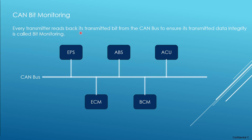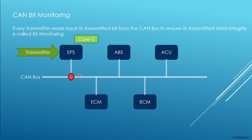We will see two cases to understand bit monitoring. Consider EPS as a transmitter. In case one, EPS starts to send the CAN bit data as one into the CAN bus, and when it reads back the data, if it reads the same bit — one — which it sent, then it continues its transmission on the CAN bus. In case two, EPS sends the bit as one to the CAN bus, but if it receives back the data as zero, it means there is a change in the bit it transmitted versus what it received back. It flags this as a bit error and stops the transmission. This bit monitoring plays a significant role in CAN bus arbitration, where all nodes monitor the bus and act as either a transmitter or receiver during communication.